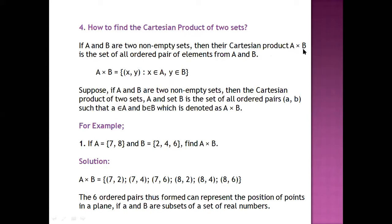A is one set and B is another set. Then A cross B will represent the elements in some ordered pair. And what is an ordered pair? We denote an ordered pair as (X, Y) — we write a brace, then X and comma, then Y, and close it.